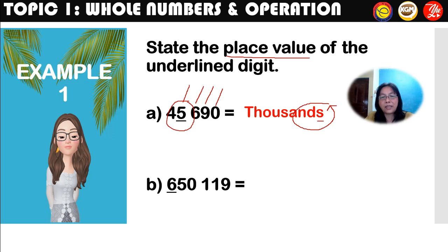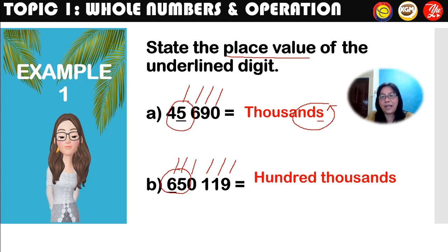Let's look at Question B: 650,119. State the place value of digit 6. Counting from the right: ones, tens, hundreds, thousands, ten thousands, hundred thousands. So the answer is hundred thousands. Again, notice we must write the letter S — hundreds, thousands.